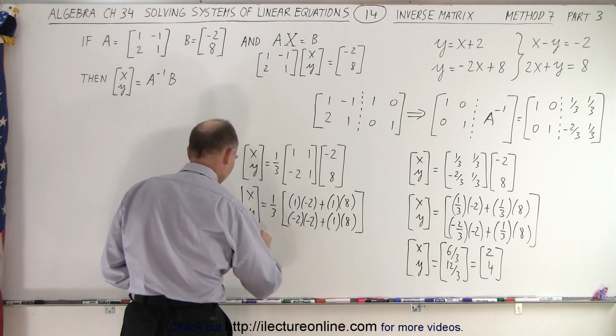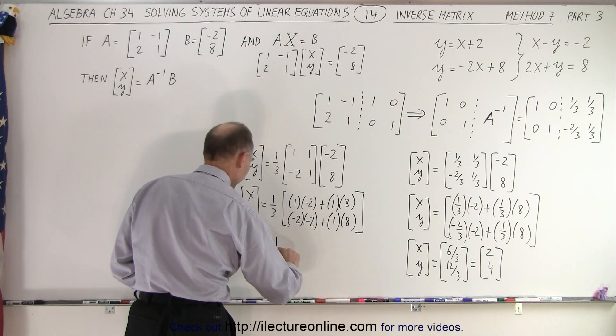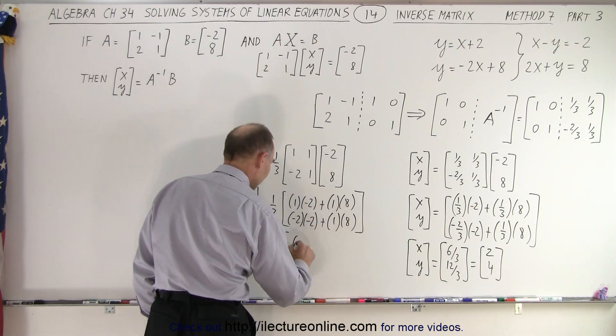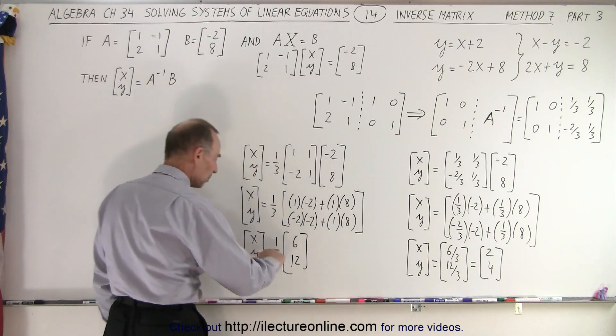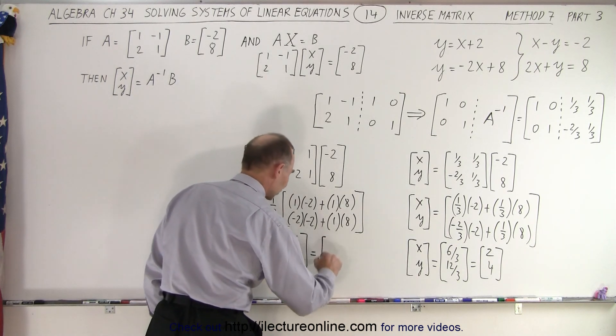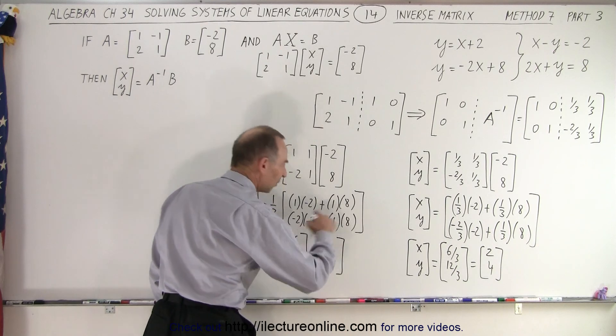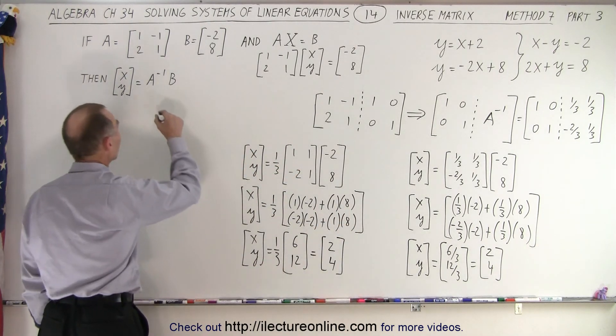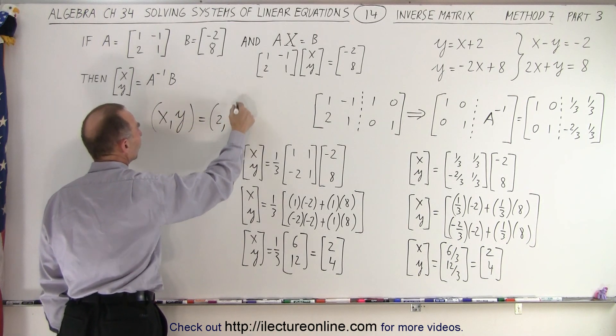So let's now simplify this. So we have the x and the y. That's equal to one third times negative two plus eight. That's a positive six. And positive four plus eight, that's a positive twelve. And now when we multiply this through, that means that one third times six gives us two. And one third times twelve gives us four. So it doesn't matter which way you do it. You get the exact same results for x and y.